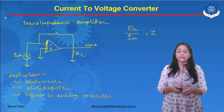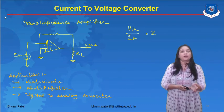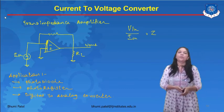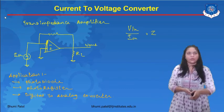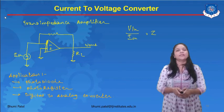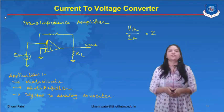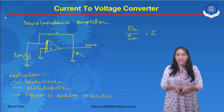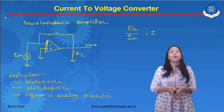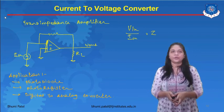The input source is a current input and the output is V-out. The applications of the current to voltage converter include photodiodes, photoresistors, and digital to analog converters.